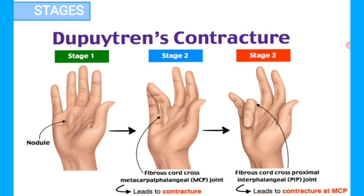There are three stages of Dupuytren's contracture. Stage one involves nodular formation. In stage two, the fibrous cord — the Dupuytren's cord or nodule — crosses the metacarpophalangeal (MCP) joint, leading to contracture at the MCP joint. In stage three, the fibrous cord crosses the proximal interphalangeal joint, leading to contracture at both the MCP and PIP joints.